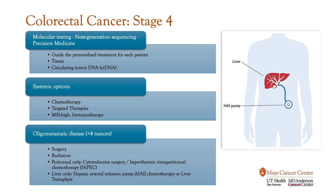In what we call oligometastatic disease — meaning there are fewer than about four tumors — we offer a combination of therapies to remove the cancer and go for a cure, including surgery, radiation, and other novel techniques. For example, if the disease is only spread to the peritoneum, we may offer cytoreductive surgery and hyperthermic intraperitoneal chemotherapy, called HIPEC. If it's spread to the liver only, in addition to surgery there are revived therapies including hepatic arterial infusion pumps, or HAI, and liver transplantation, which is newer in this domain.